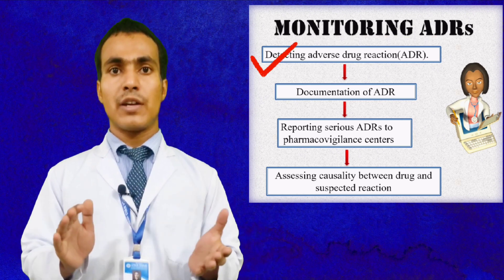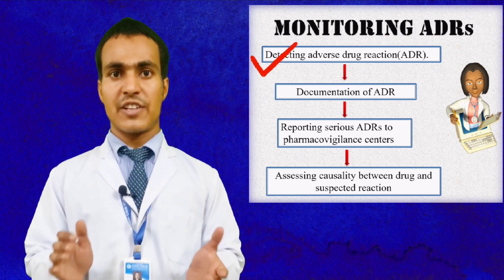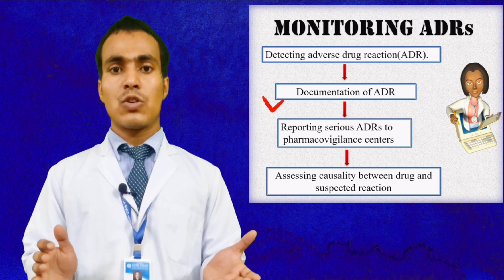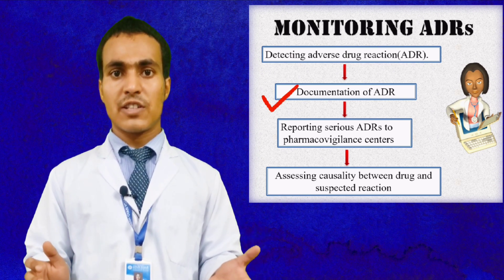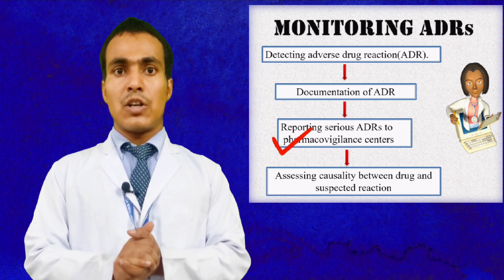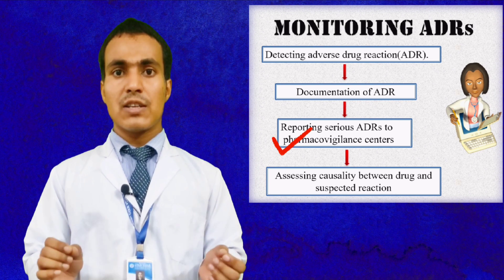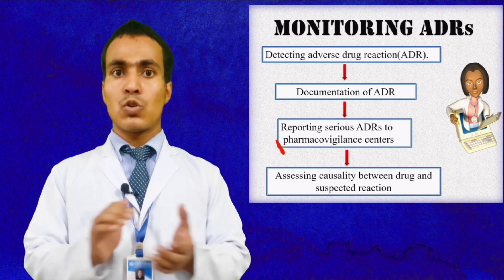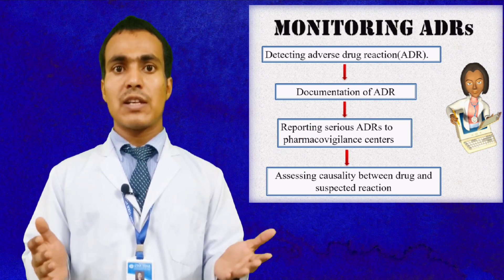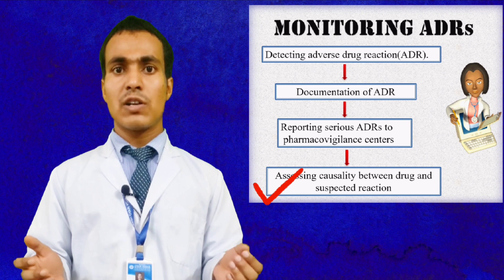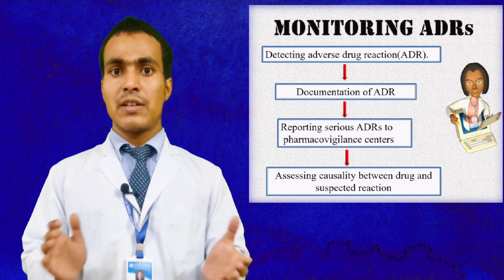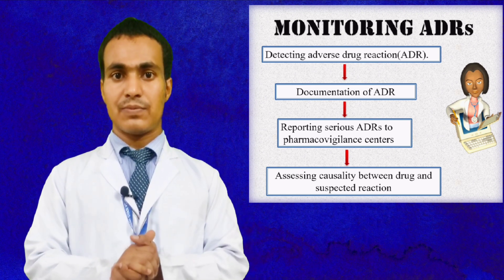We can monitor ADRs in the following steps: first, detection of the adverse drug reaction; second, documentation of the adverse drug reaction; third, reporting serious ADRs to pharmacovigilance centers; and fourth, assessing causality between the drug and the suspected reaction.